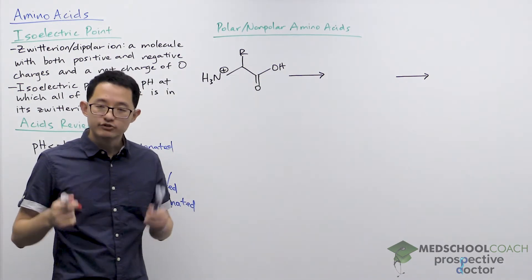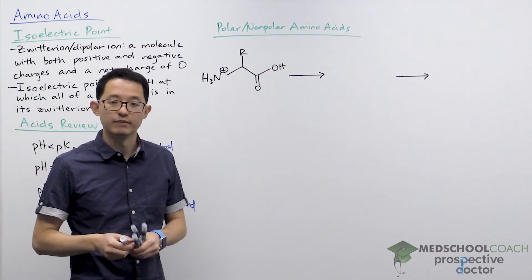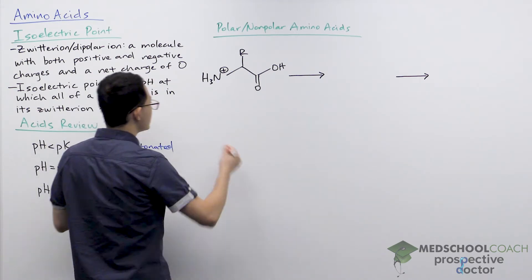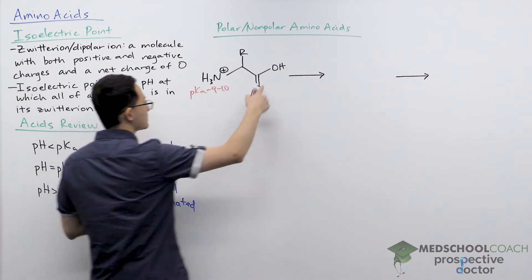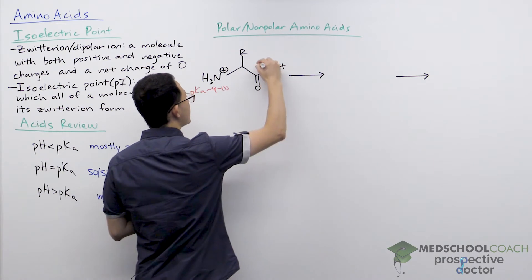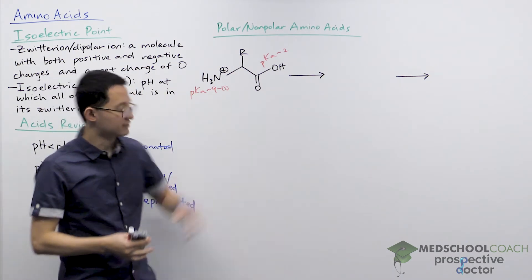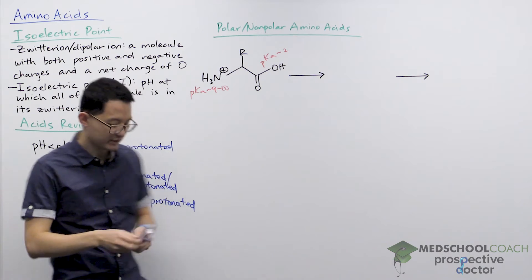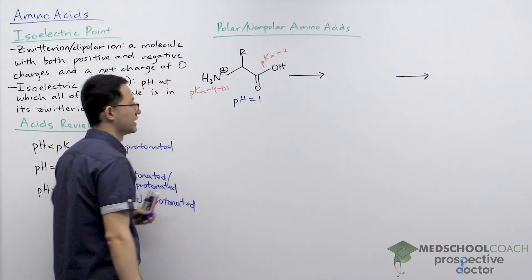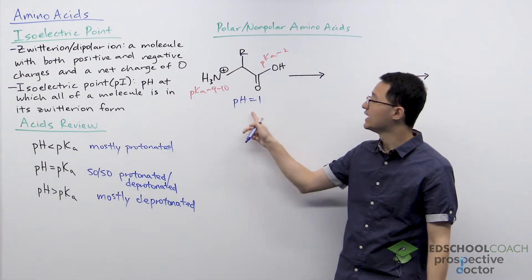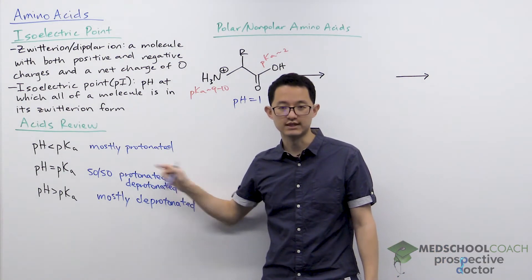For the MCAT, you need to have memorized the pKa's of the amino group and carboxyl group of amino acids. The amino group generally has a pKa around 9 to 10, whereas the carboxylic acid generally has a pKa of about 2. So if both groups are protonated, our solution has to be at a pH of something like 1 — which is less than both of these pKa's, meaning both groups should be mostly protonated in solution.